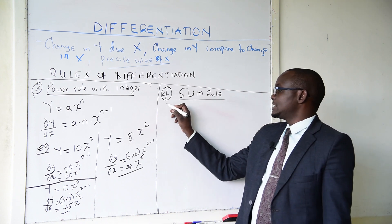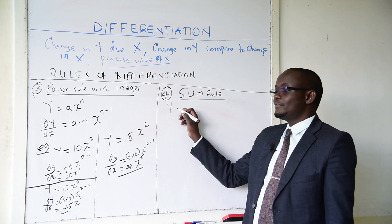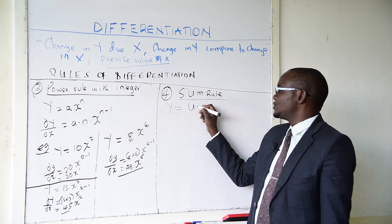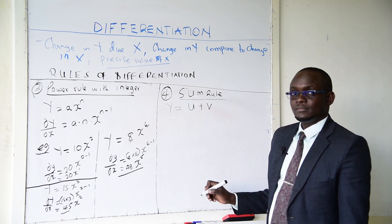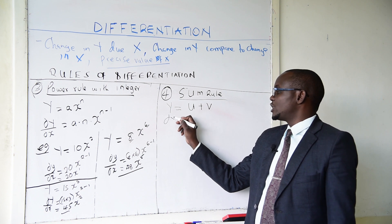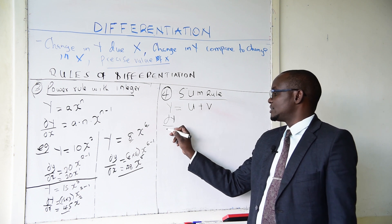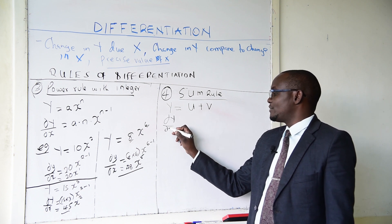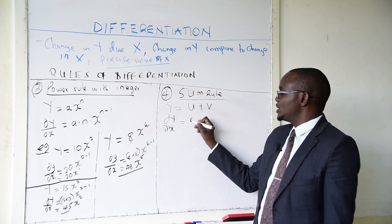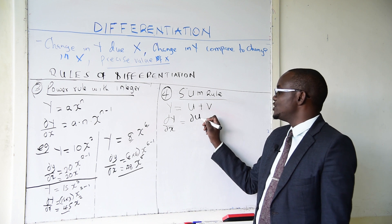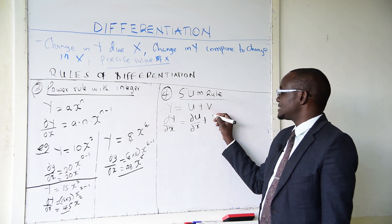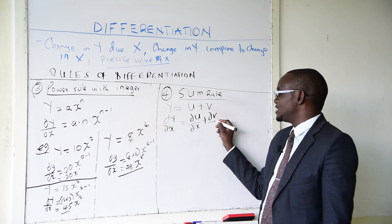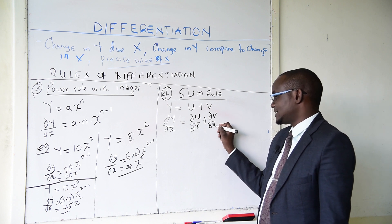The sum rule states that when you are given y equals u plus v, to differentiate and get dy/dx, you differentiate u with respect to x and add the differentiation of v with respect to x.